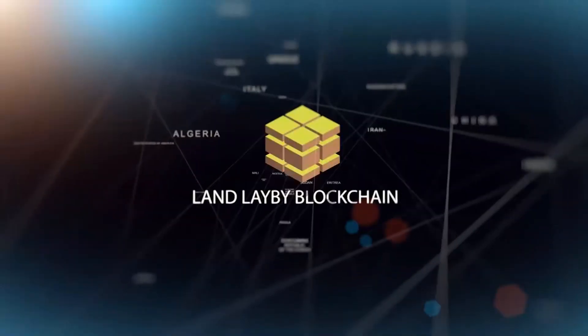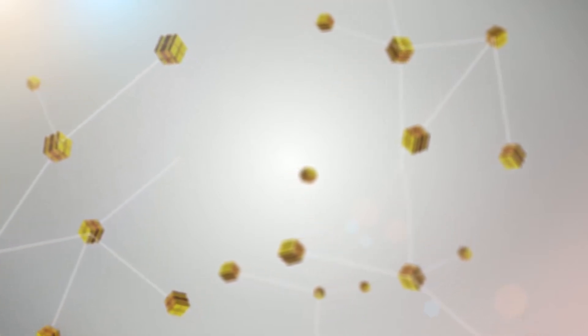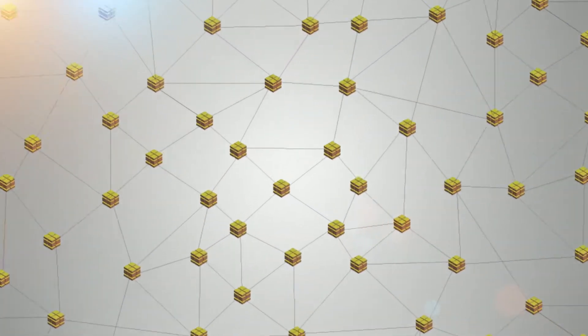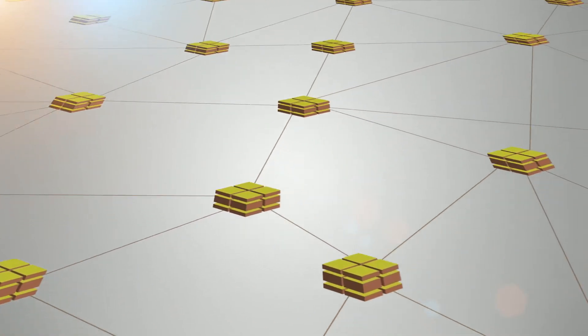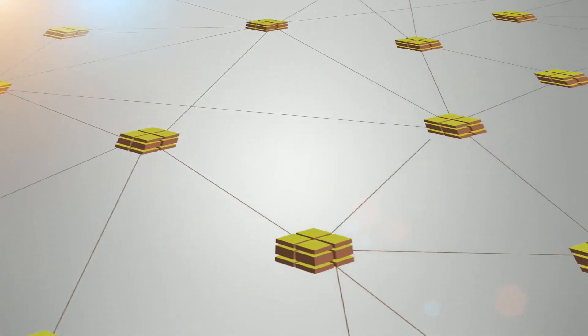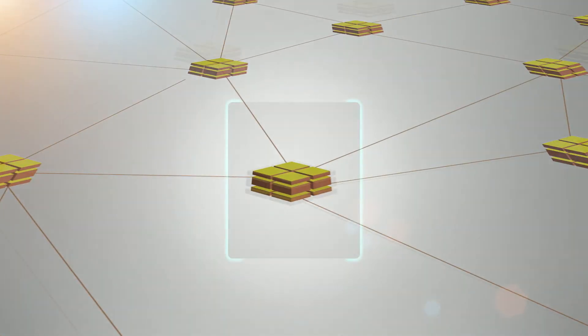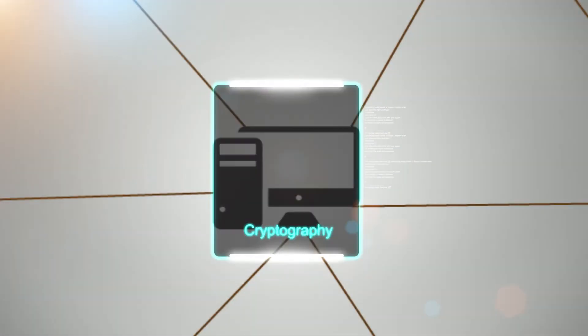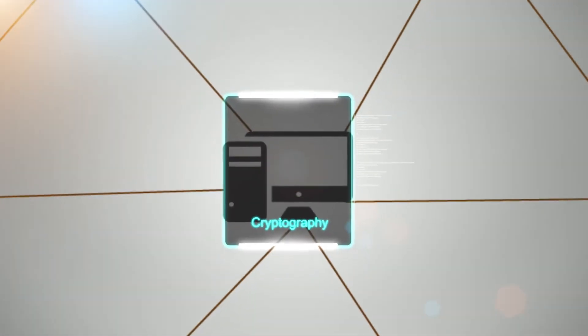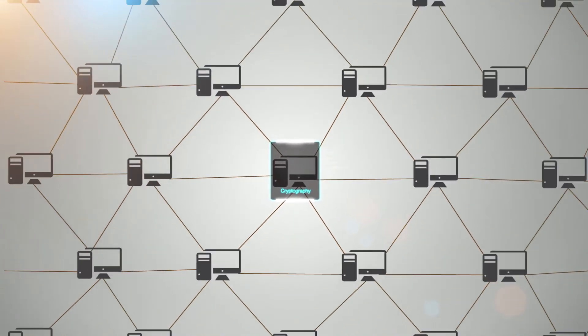Landlay by Blockchain is a continuous list of land transaction records for a specific parcel of land. The land transaction information constitutes a complete block, which is then linked like a chain to a different block containing another set of land transaction details. These blocks are then secured using special and unbreakable codes, a process known as cryptography.